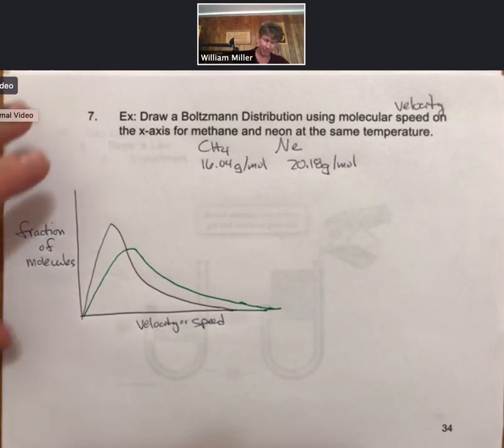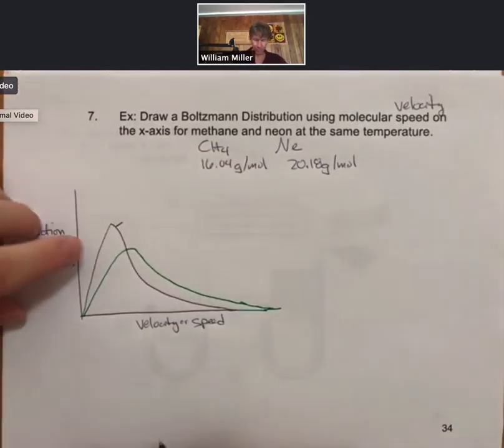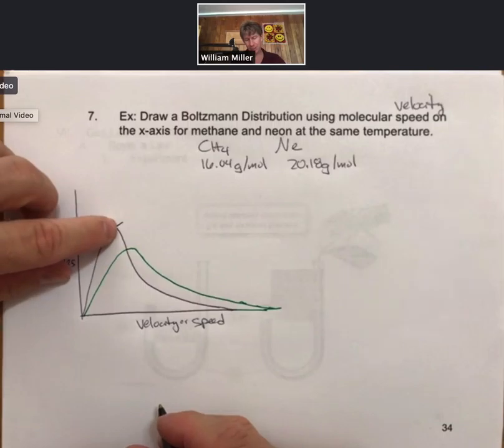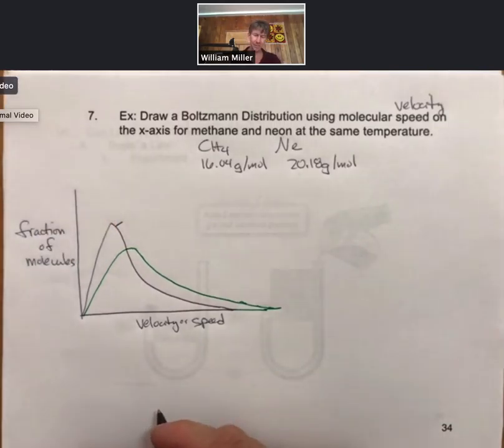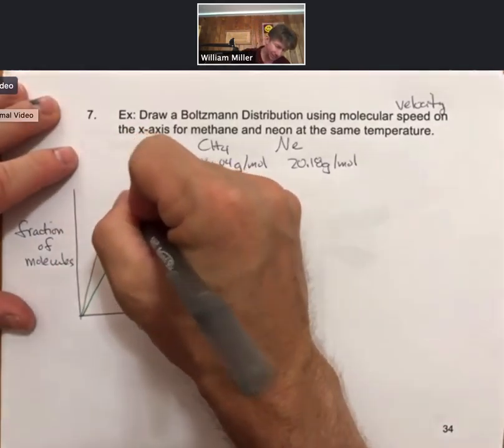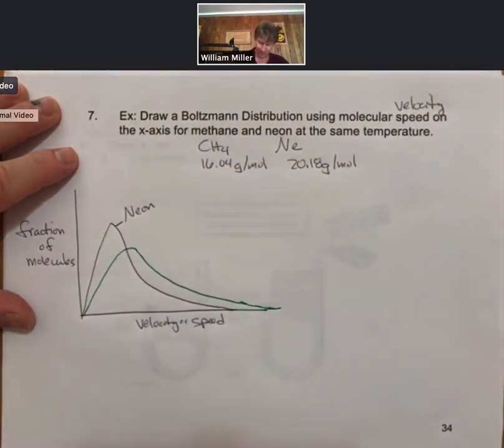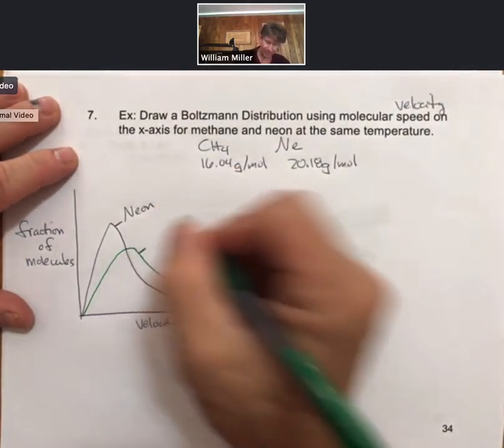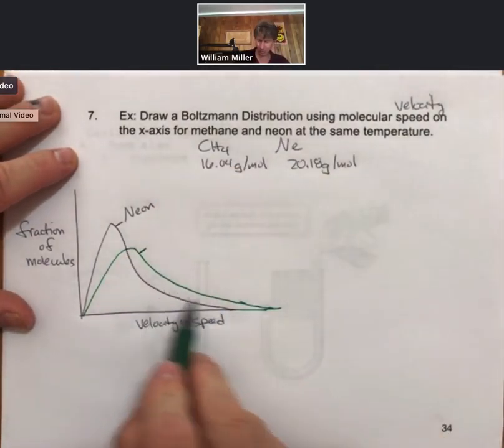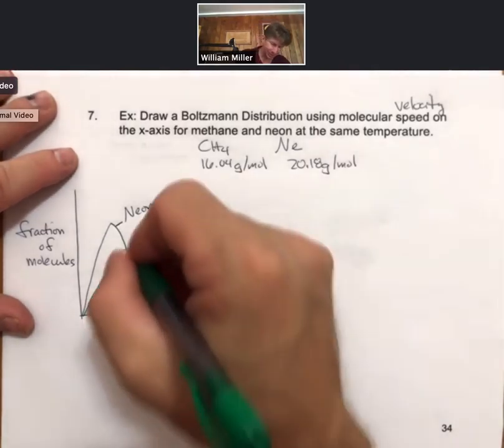So we will say that the one with the peak and the average at the lower velocity must be neon, and the one at the higher velocity, and higher meaning farther along the x-axis, must be methane.